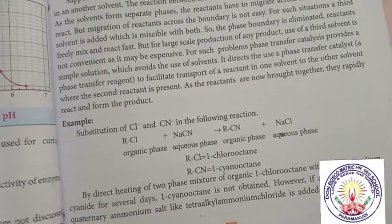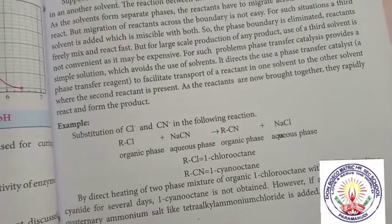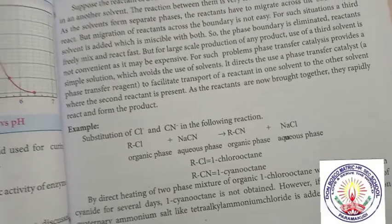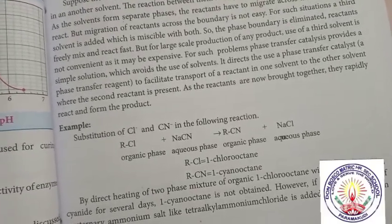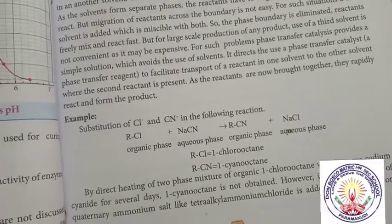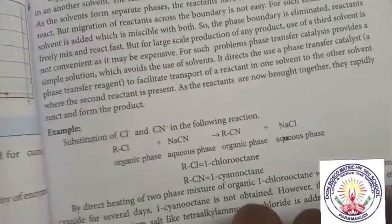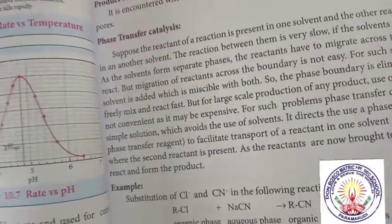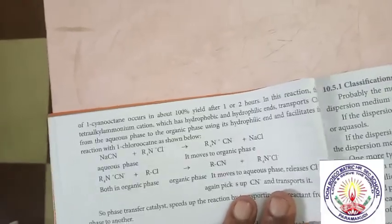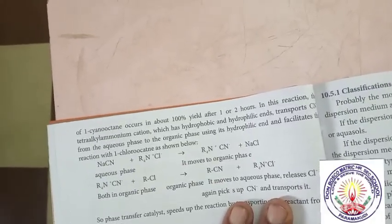By direct heating the two-phase mixture of organic 1-chlorooctane with aqueous sodium cyanide for several days, 1-cyanooctane is not obtained. However, if a small amount of quaternary ammonium salt like tetraalkyl ammonium chloride is added, a rapid reaction occurs and 1-cyanooctane is obtained in about 100% yield after 1 or 2 hours.